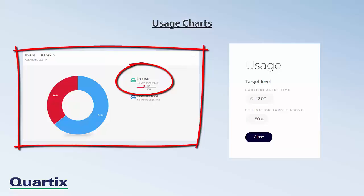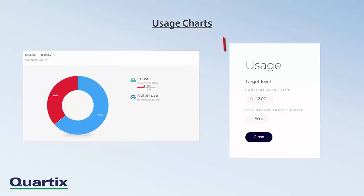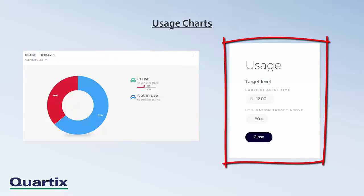The latter provides a visual reference of the actual value to the target value. The image on screen now shows the configuration parameters for this component. The earliest alert time is the earliest time at which the alert will be displayed — this will avoid having alerts at the start of the day when all vehicles will be below target. The utilization target is the target percentage of vehicles utilized.